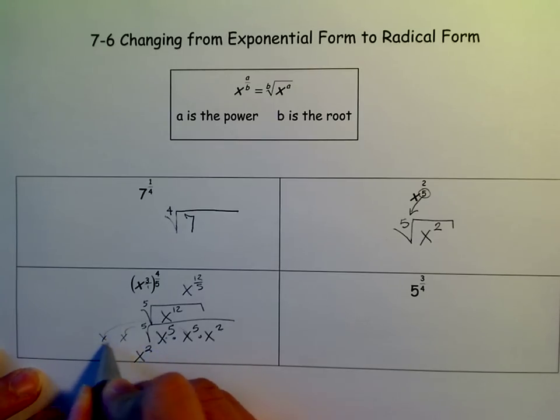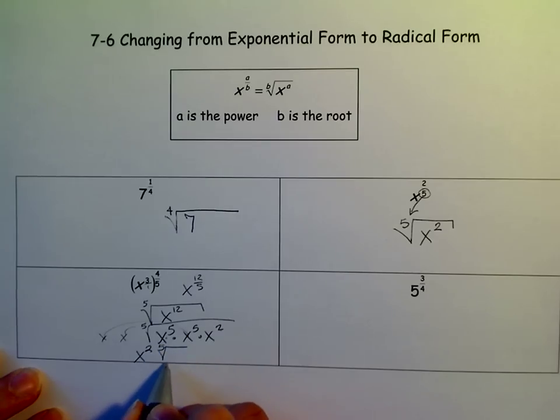When that one comes out, it becomes an x. And x times x is x squared. And then inside the radical, we have x squared. So this would be our simplest form of that radical.